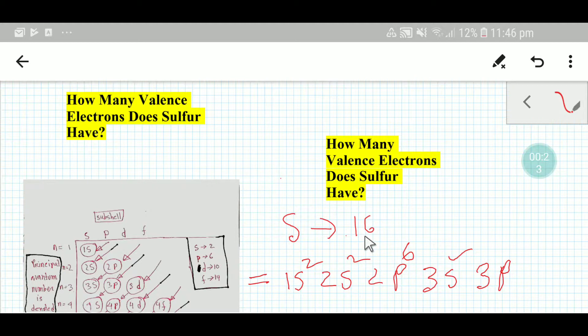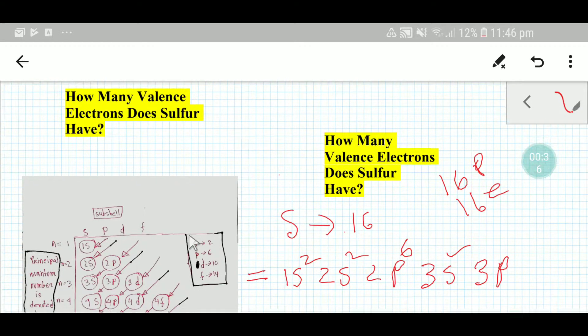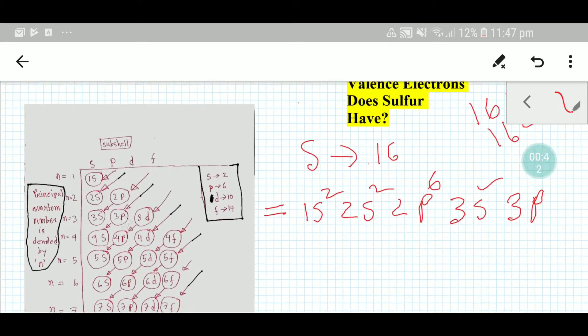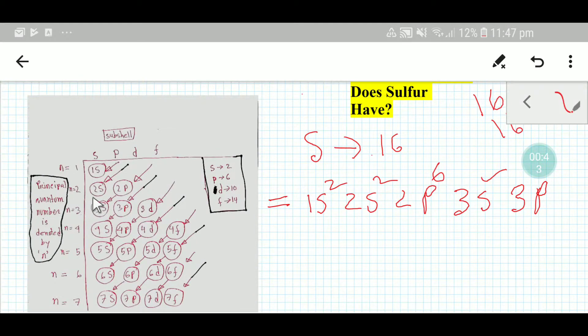This means that sulfur has 16 protons and 16 electrons. Let me distribute these 16 electrons in different sub-shells. As you do the electronic configuration of sulfur, we will use this diagram. This diagram is known to all, I think so.